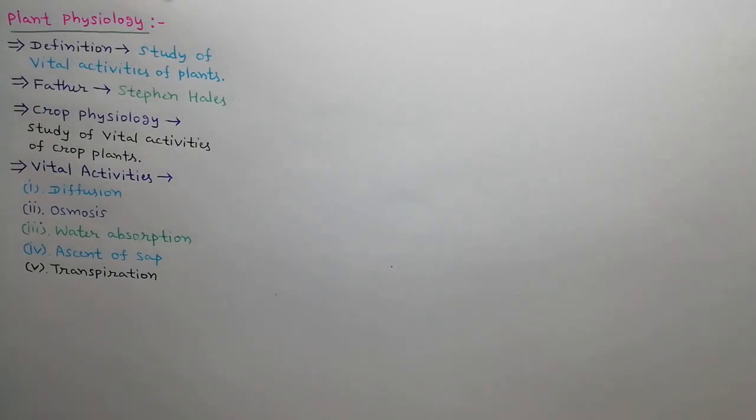Transpiration is a process of loss of water from aerial parts of plants in the form of vapors. Mostly, water vapors are emitted through the stomata present on leaf surfaces. Some water vapors also lose through epidermis of aerial plant parts.